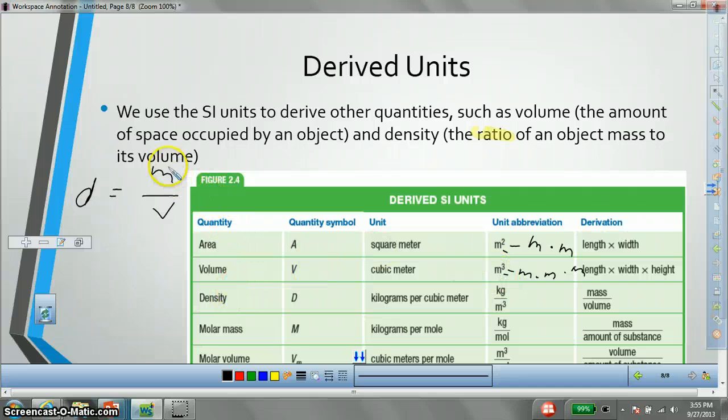Density, again, is found by dividing mass by volume. So, we take kilograms, which is what we measure mass in, and divide it by volume, which is cubic meters. So, here we've really got kilograms divided by meters times meters times meters. And there's molar mass, where we take mass divided by moles. So, it's kilogram per mole, et cetera. Right now, we're going to work with area, volume, and density. We'll get to molar mass in a later chapter.